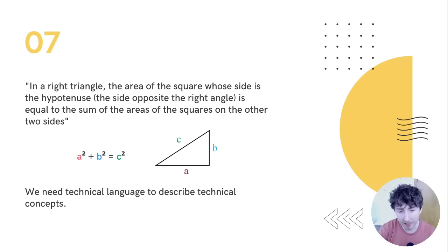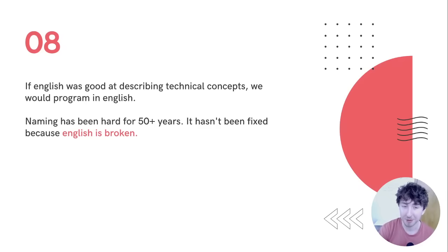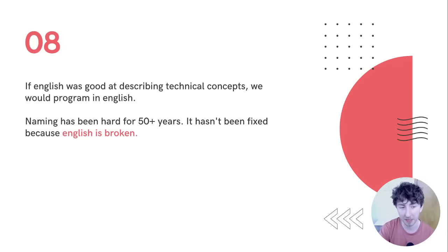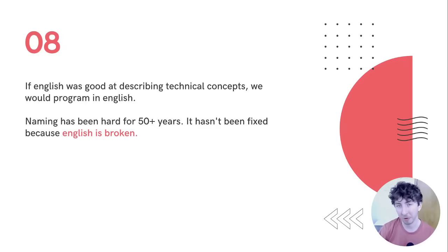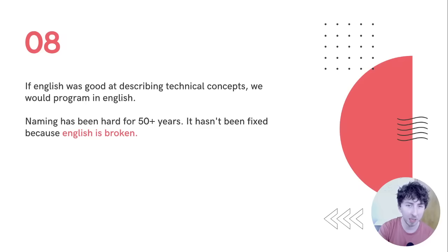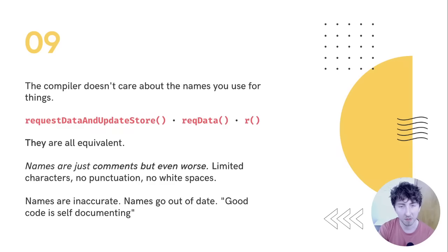We really need technical language to describe technical concepts because English is not designed for this. If English was actually good at describing technical concepts, we would just write our programs in English — but we write them in code because English isn't good for describing technical effects and logical flow. Naming has been hard basically since names started becoming part of programming, and it hasn't been fixed in more than 50 years because English is fundamentally broken for this type of thing.